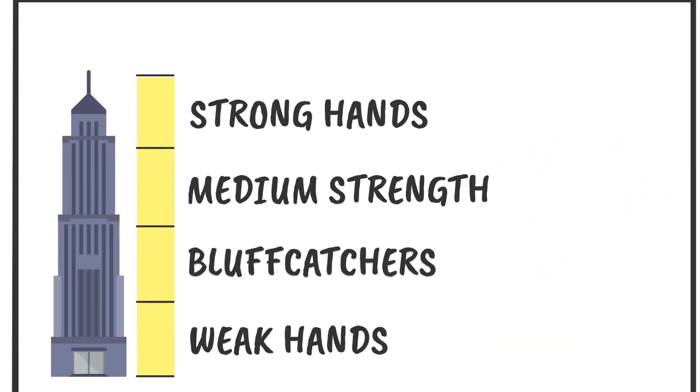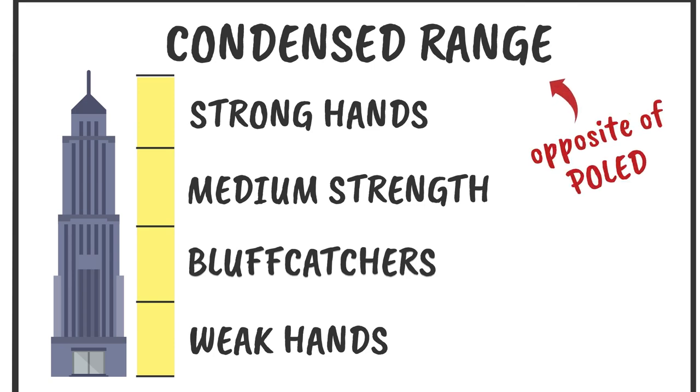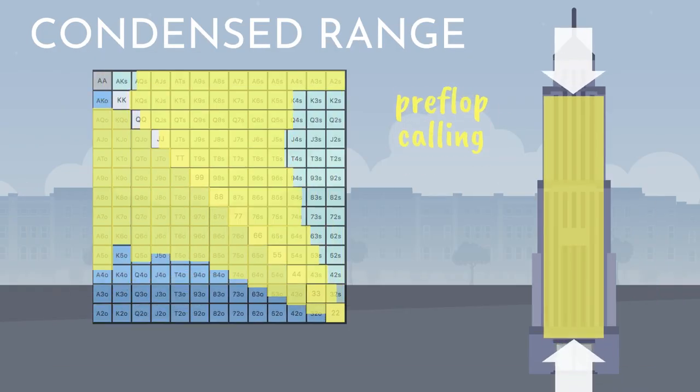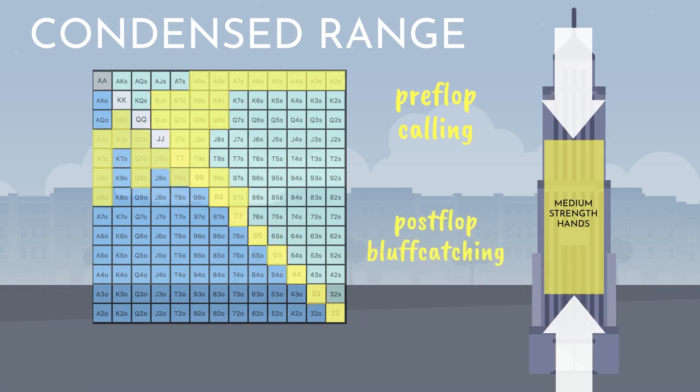A condensed range is essentially the opposite of a polarized range—a range whose only residents are middle-strength hands. This can be applied to a pre-flop calling range in many spots, or a bluff-catching range in a post-flop scenario.